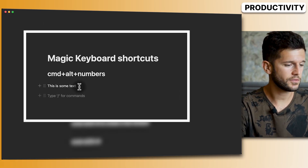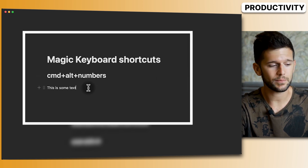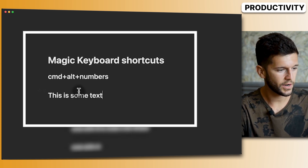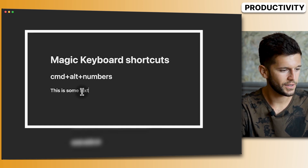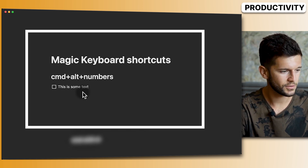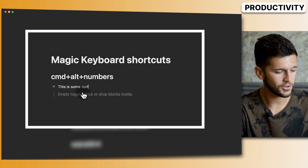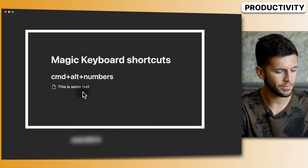Productivity tip number one: keyboard shortcuts. One shortcut I love is Command+Alt plus any number. Command+Alt+1 for header one, 2 for header two, 3 for header three, 4 for checkbox, 5 for bullet point, 6 for number list, 7 for toggle, 8 for code, and 9 for page.